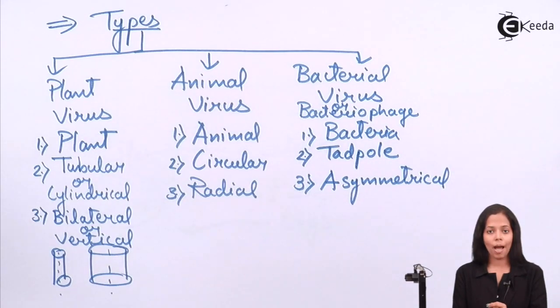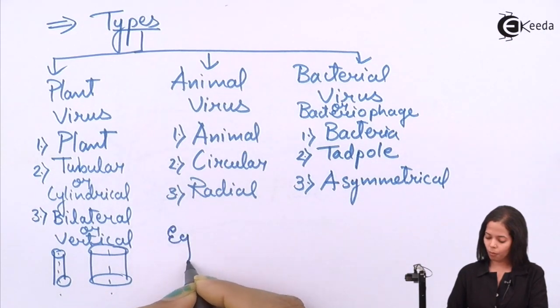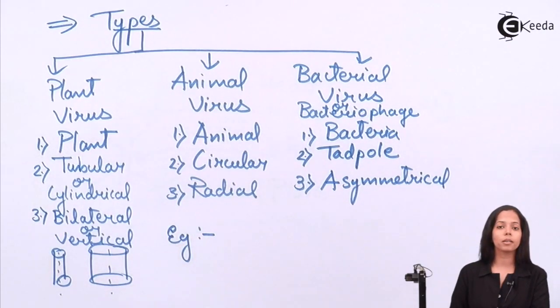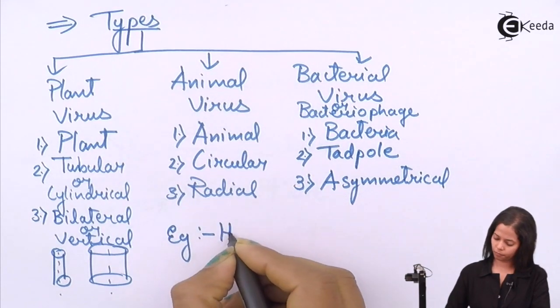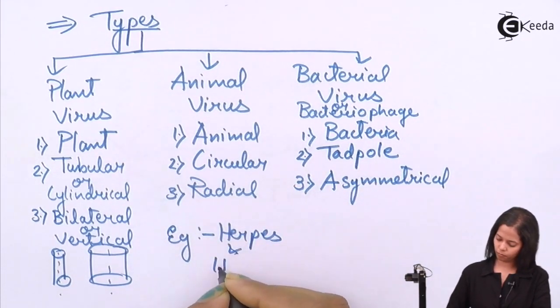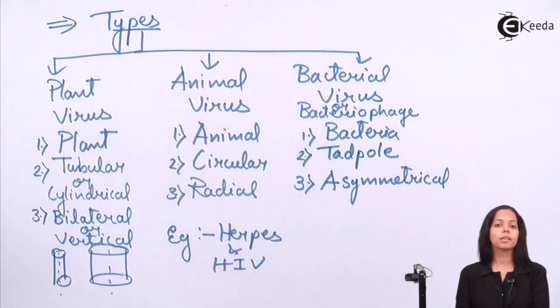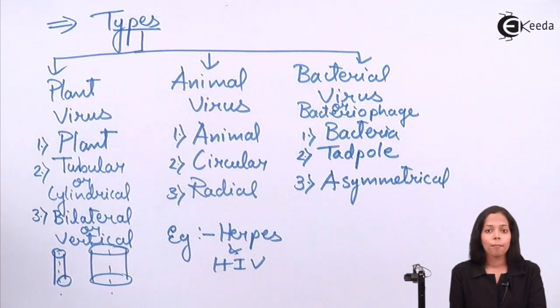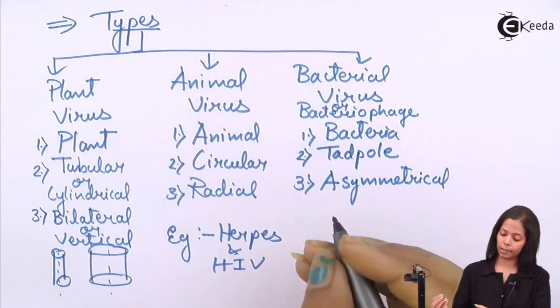These are the fourth point. Last is example. Speaking about example of plant virus, it is TMV virus, tobacco mosaic virus. Speaking about animal virus, example is herpes virus or HIV. Last is bacterial virus. Bacterial virus name is N13 or lambda virus.